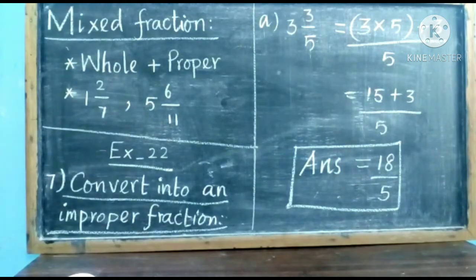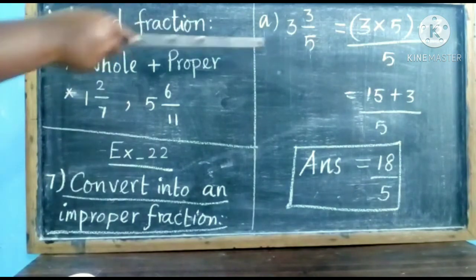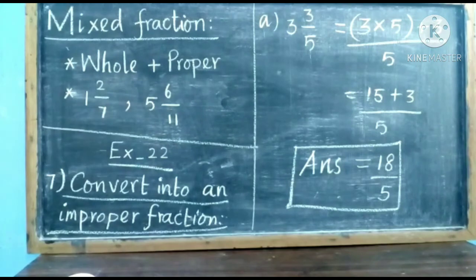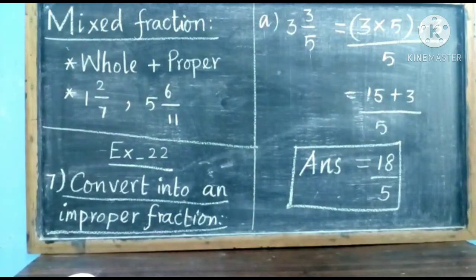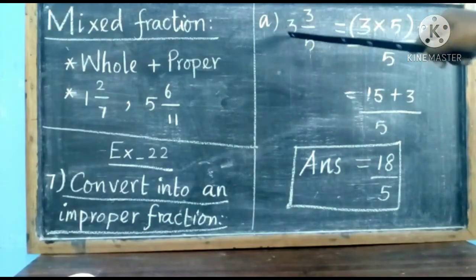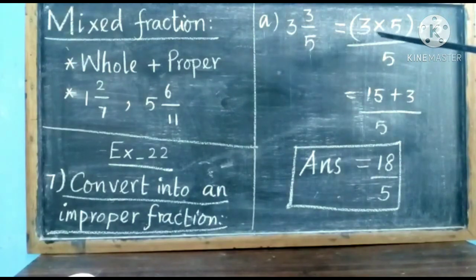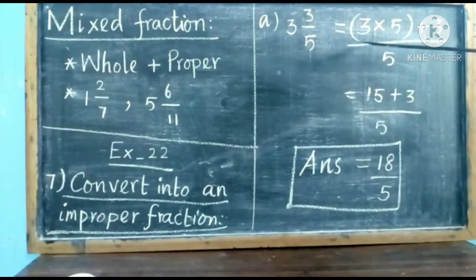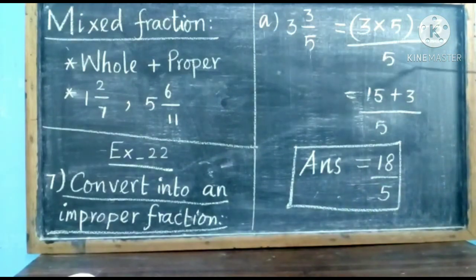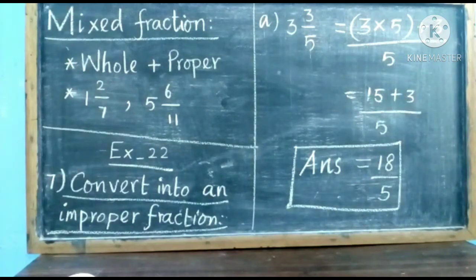Exercise 22, question number 7: convert into an improper fraction. The mixed fraction given is 3 and 3 by 5. To convert this mixed fraction into an improper fraction, first we multiply 3 with 5 — that is 3 into 5 — then add the numerator: 3 into 5 is 15, plus 3 equals 18. The denominator stays as 5, so the answer is 18 by 5. We converted 3 and 3 by 5 as 18 by 5.